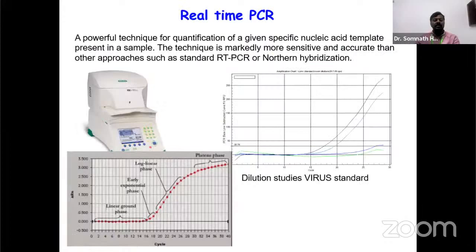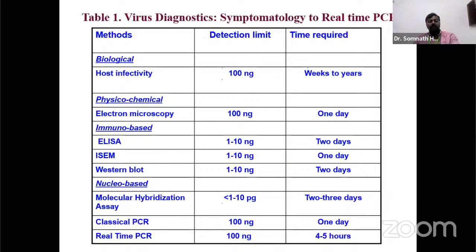Real-time PCR allows us to see the progress of gene expression in real time. Comparing detection limits of different techniques: host infectivity has a detection limit of 100 nanograms, electron microscopy 100 nanograms, ELISA 1–10 nanograms, whereas real-time PCR can detect down to 100 picograms. These detection limits indicate why PCR-based methods are preferred for sensitive diagnosis of plant viruses.